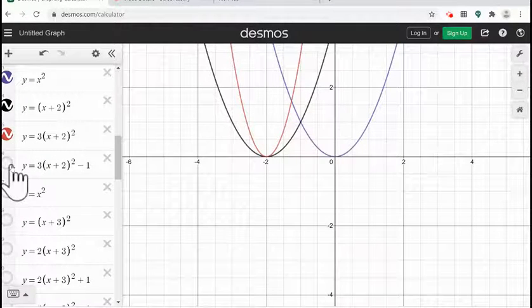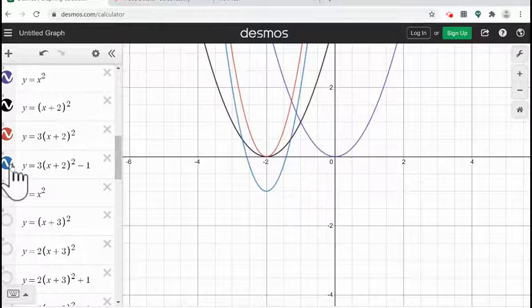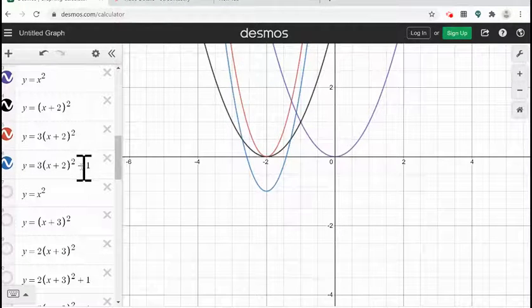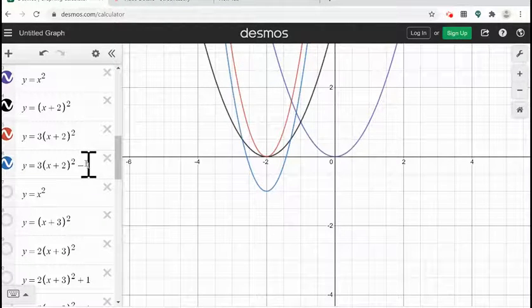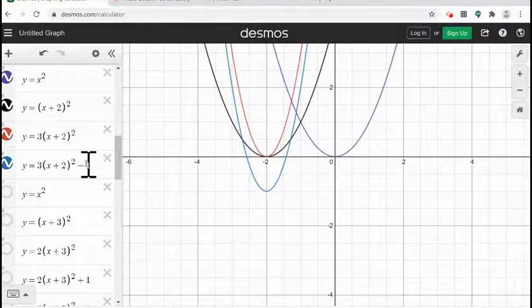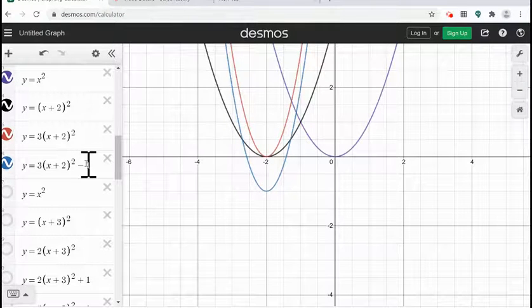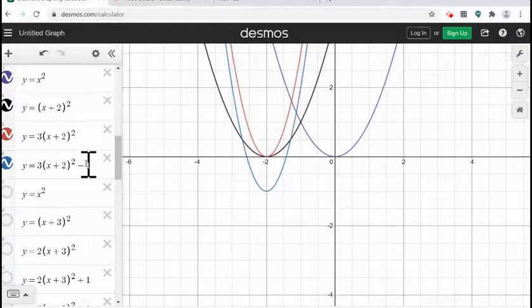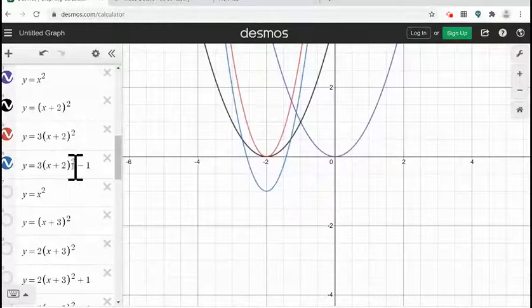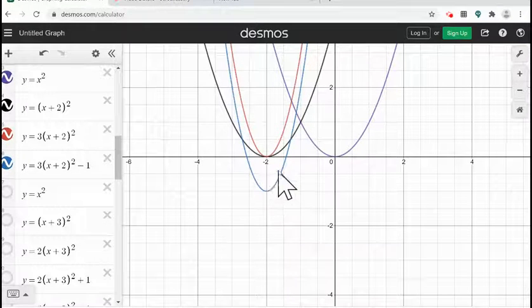And the last and third step, I am subtracting 1 from my function. So it results with the vertical shift to the down by 1 unit. So as you can see in the blue function.